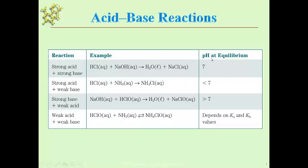Strong acid and a strong base will reach 100% at equilibrium, and because the products don't have acid-base properties, this is going to be neutral. With a strong acid and a weak base, we reach equilibrium at essentially 100% ionized, and that's going to be an acidic pH because one of the products is an acid. When we have a strong base and a weak acid, that will reach completion because the strong base outweighs the weak acid, and at equilibrium we have a pH greater than seven because one of our products — ClO− — would be a base, having basic properties as the conjugate of a weak acid. When you have a weak acid and a weak base, the pH depends on the relative values of Ka and Kb, because we don't know which side will have a higher concentration.